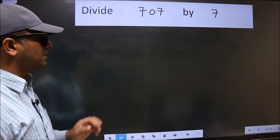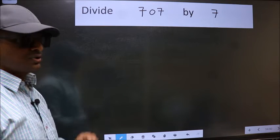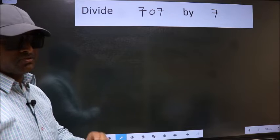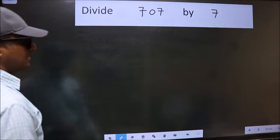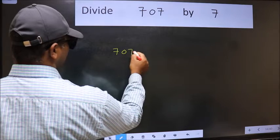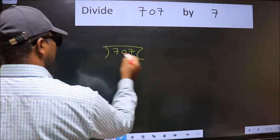Divide 707 by 7. To do this division, we should frame it this way: 707 here and 7 here.